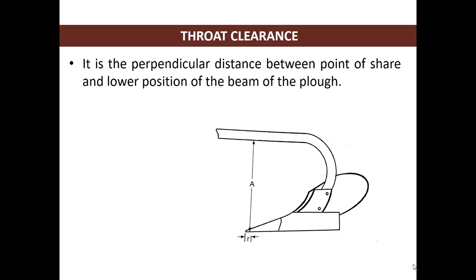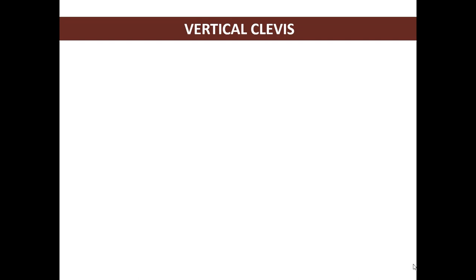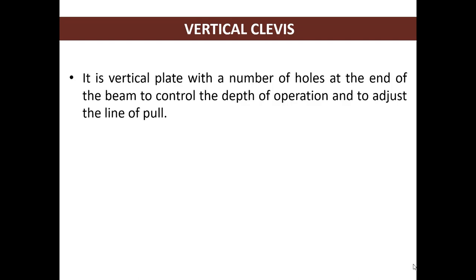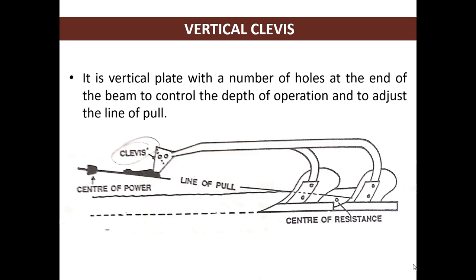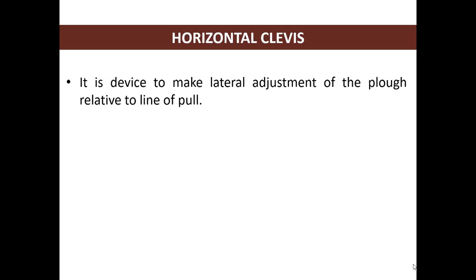Throat clearance is the perpendicular distance between the point of shear and the lower position of the beam of the plow, as you can see in the figure. Vertical clevis is the vertical plate with a number of holes at the end of the beam to control the depth of operation and to adjust the line of pull. Horizontal clevis is the device to make lateral adjustment of the plow relative to the line of pull.